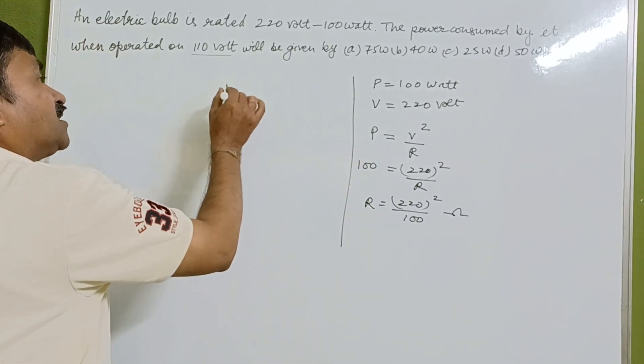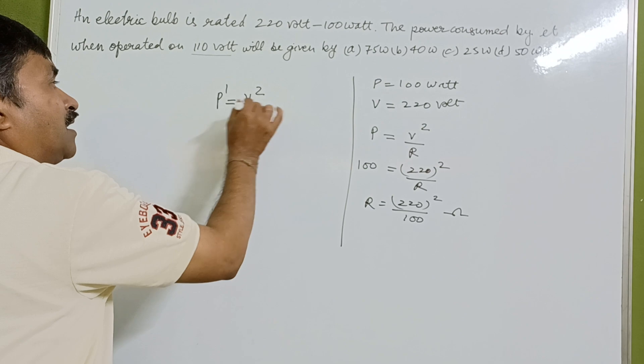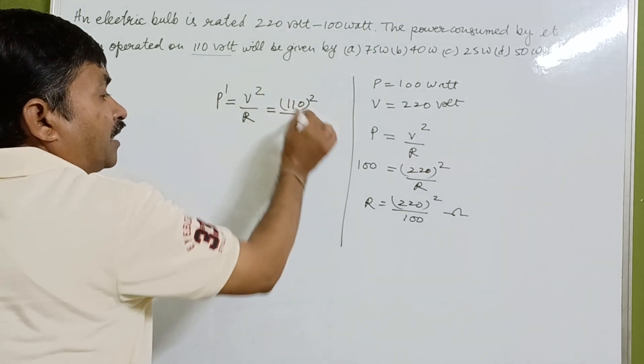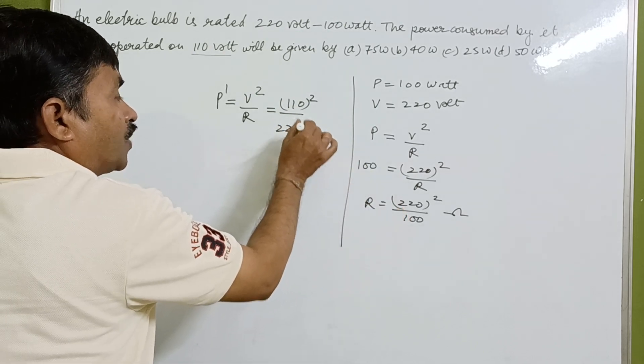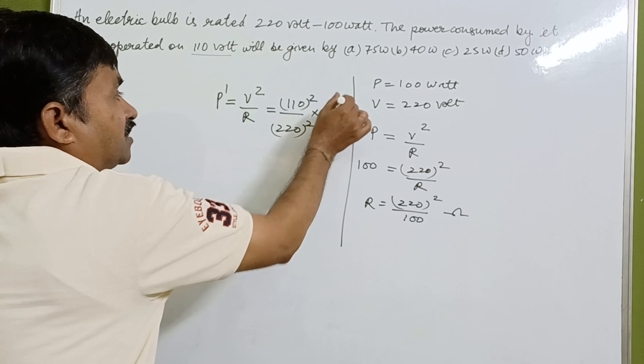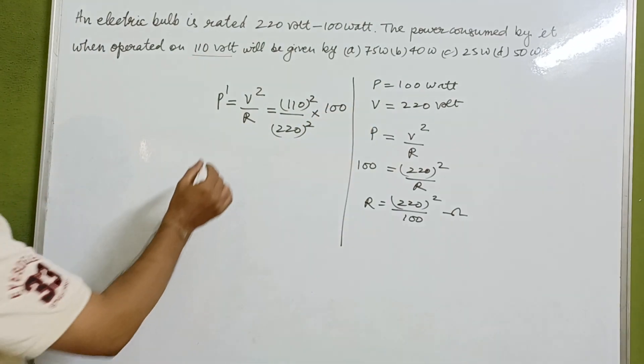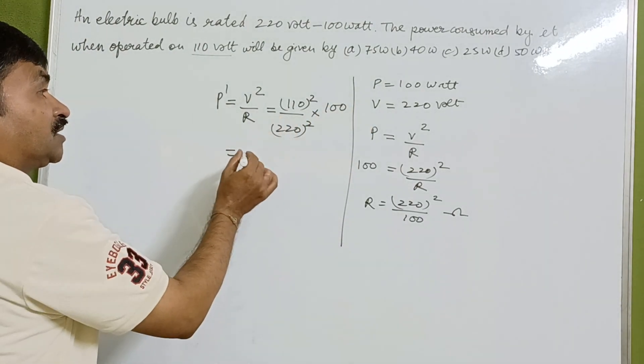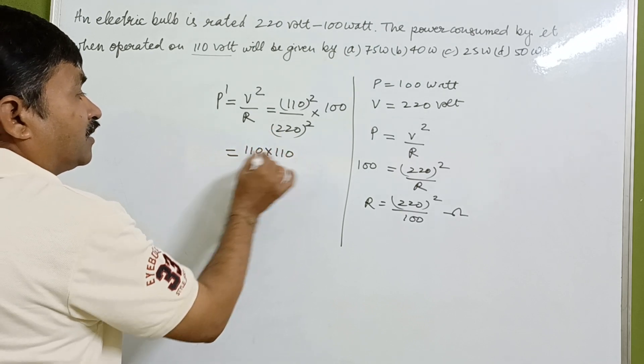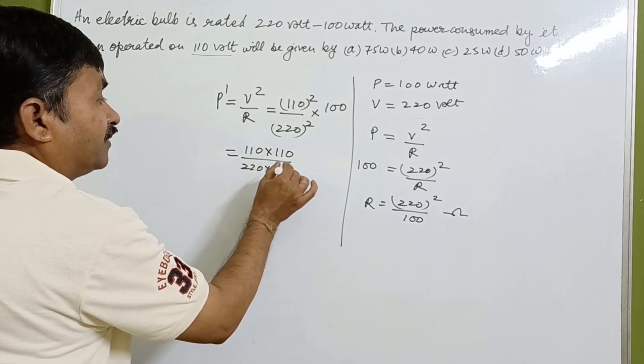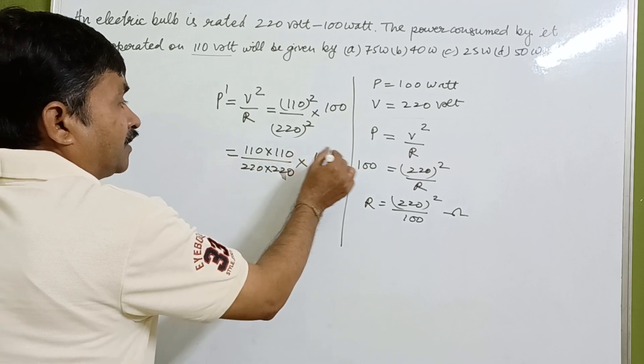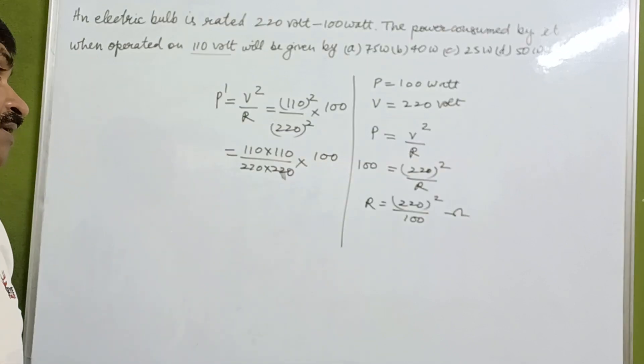It is multiplied with this 100, so our power is going to be 220 squared upon 100. For the new power consumption, we will calculate 110 into 110 divided by 220 into 220.